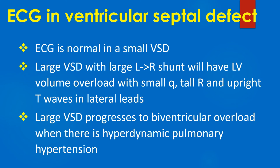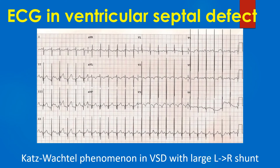ECG is normal in a small ventricular septal defect. Large VSD with large left-to-right shunt will have left ventricular volume overload with small Q waves, tall R waves, and upright T waves in the lateral leads. Large VSD progresses to biventricular overload when there is hyperdynamic pulmonary hypertension. The ECG pattern of biventricular hypertrophy is called Katz-Wachtel phenomenon, with tall biphasic QRS complexes of amplitude over 50 mm in mid-precordial leads. This pattern is usually seen in children.